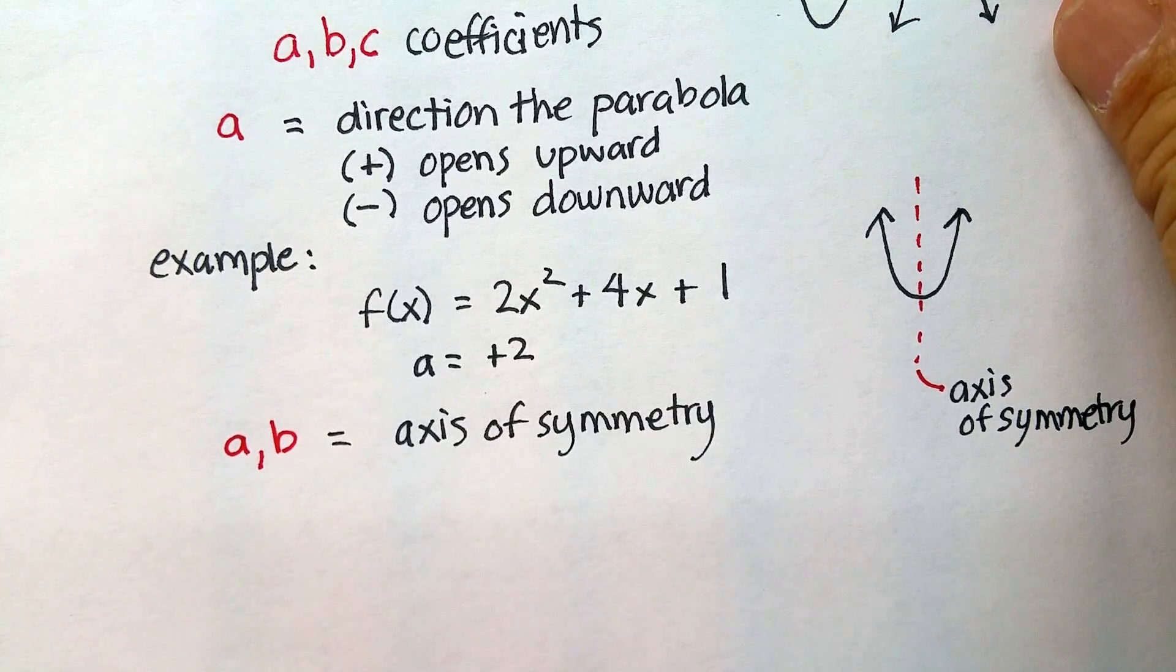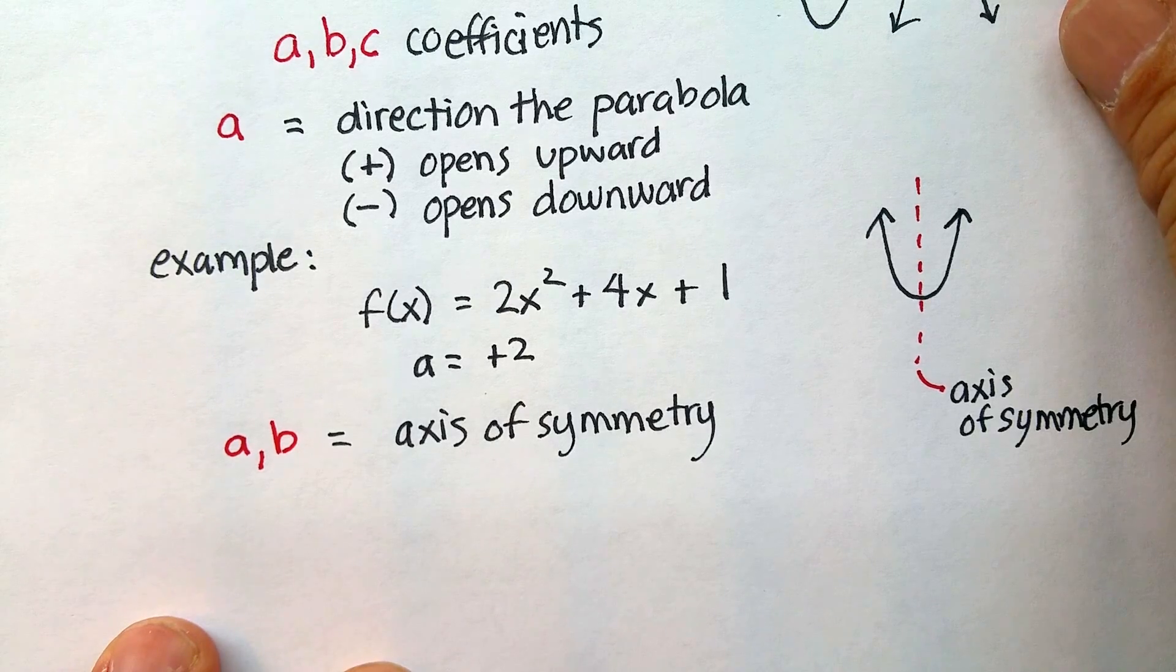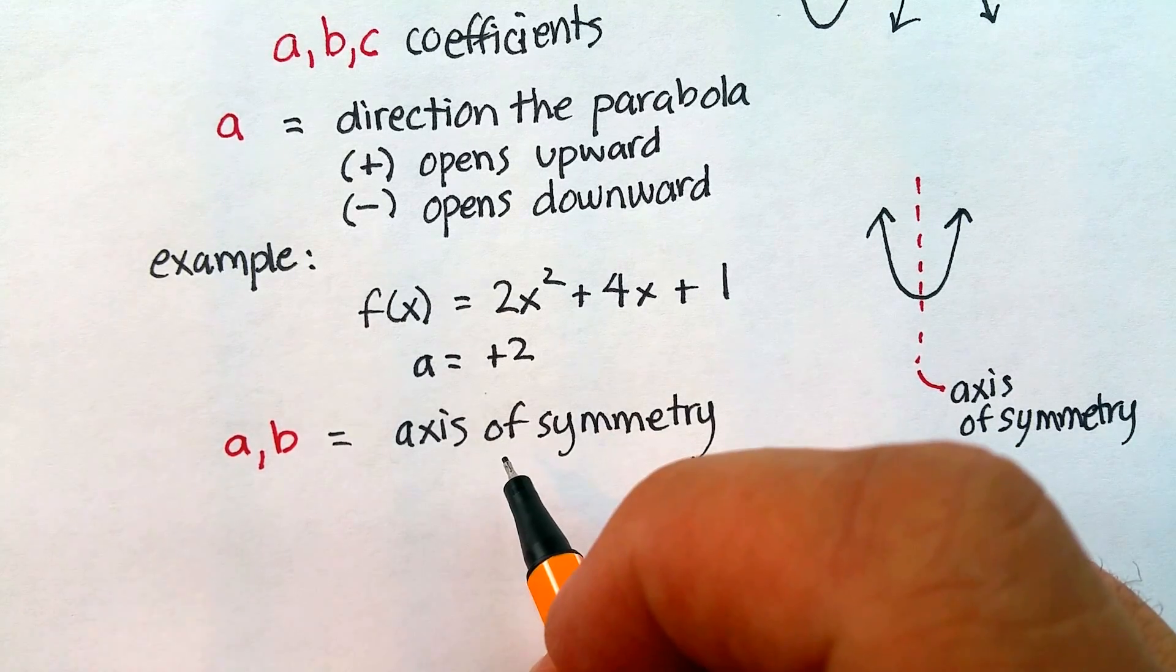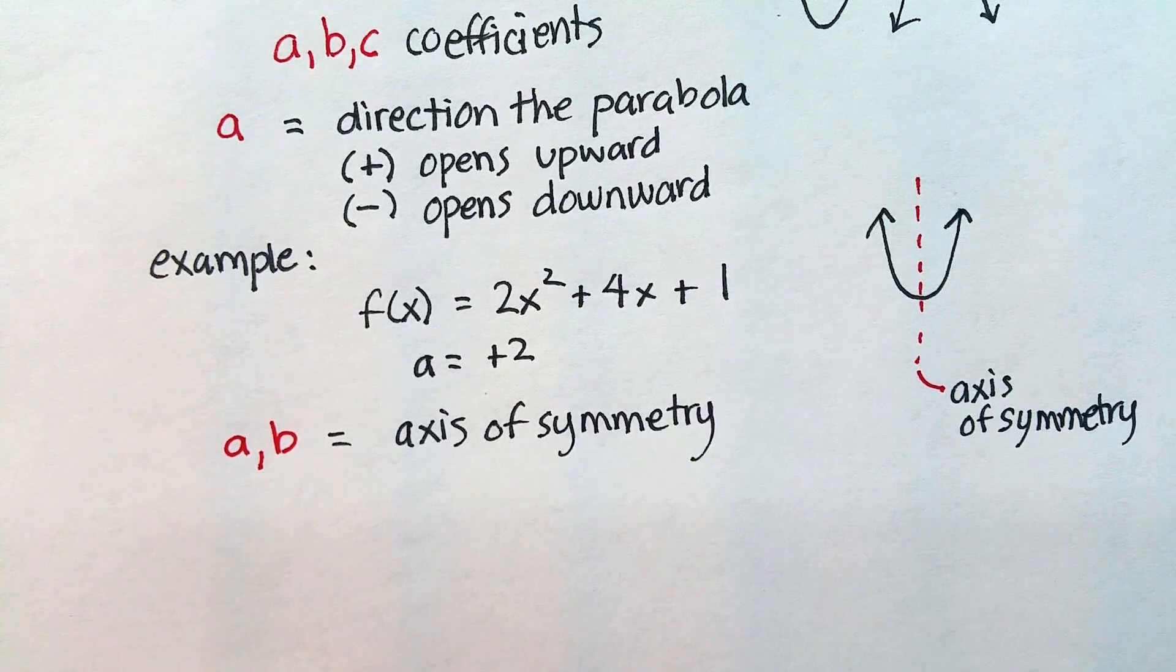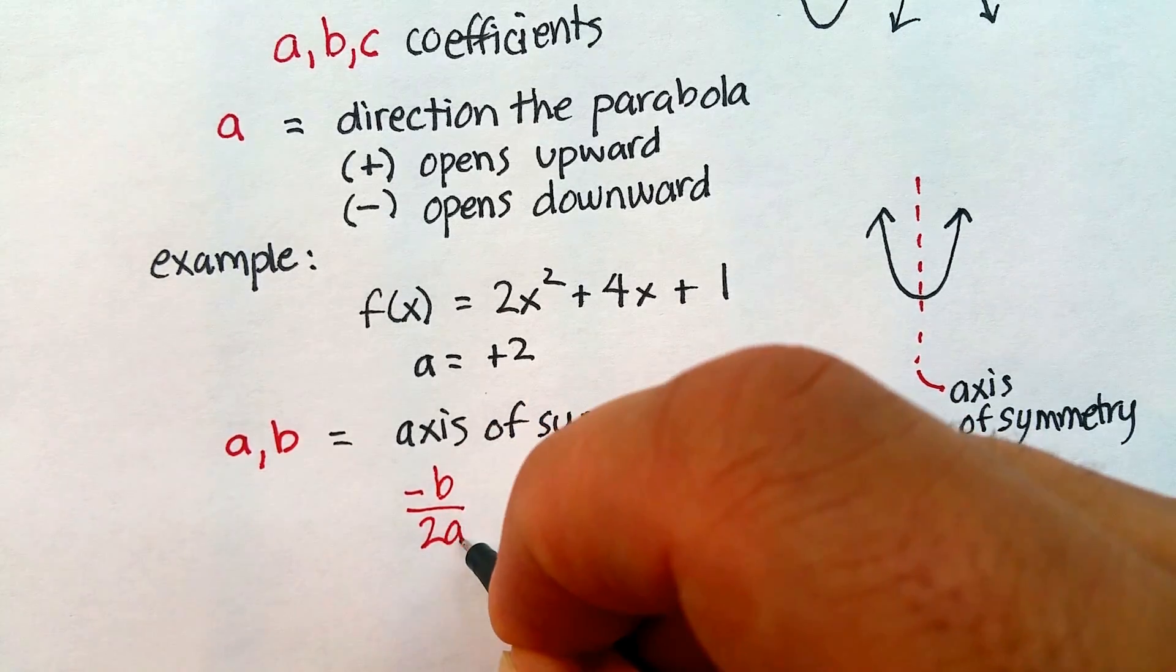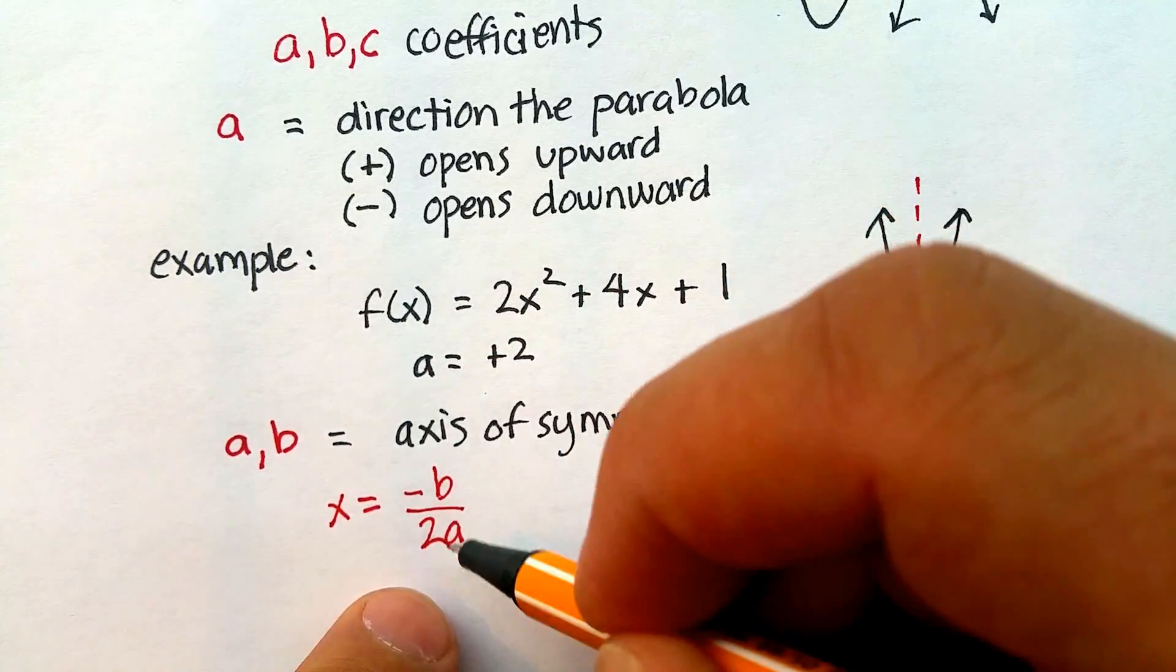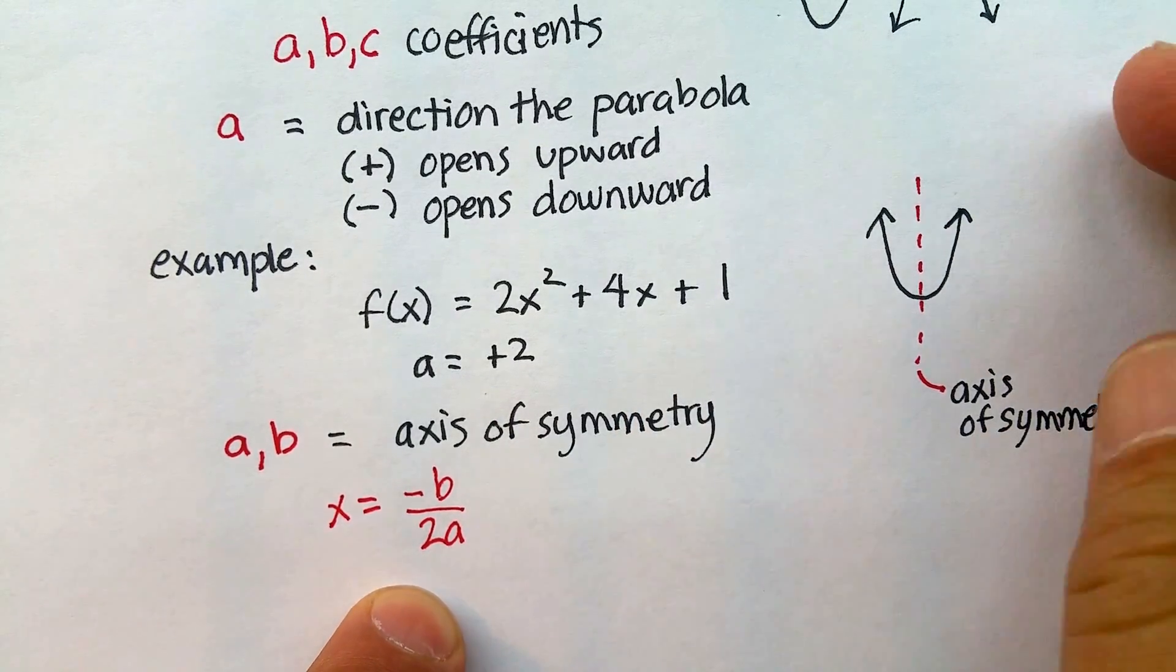And, the axis of symmetry is some type of equation. It's usually an x value. Like, x is equal to 10 or x is equal to 5. And, how do you find the axis of symmetry? It's basically this particular formula right here. Negative b over 2a. So, x is equal to negative b over 2a. And, that will give you the axis of symmetry.